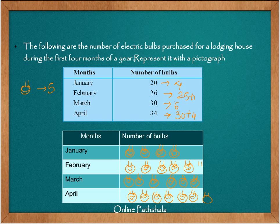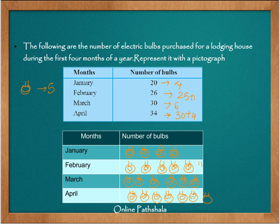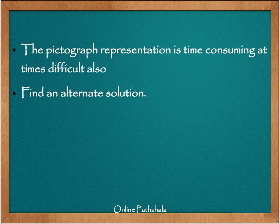The pictograph representation is time-consuming and at times difficult. We have to draw an object for each entry. In the previous method, tallies were easier to draw but couldn't convey what we were actually counting. With pictographs, seeing objects like a person, watch, or face tells you what the data is about. We need an alternate solution, which will be covered in the next lecture. Thank you.